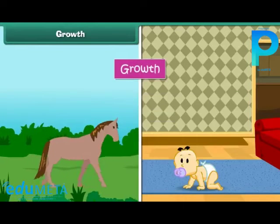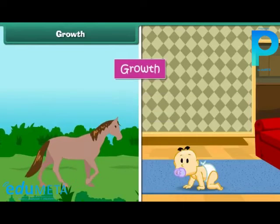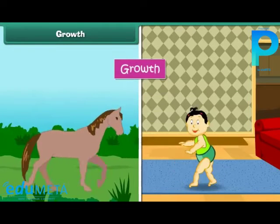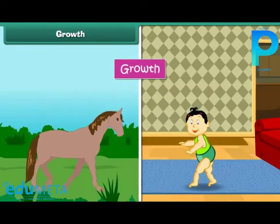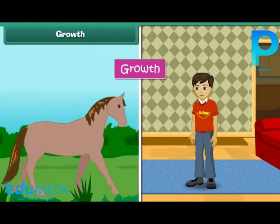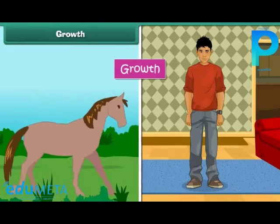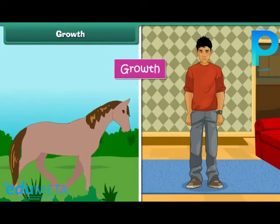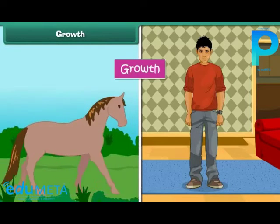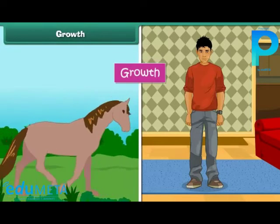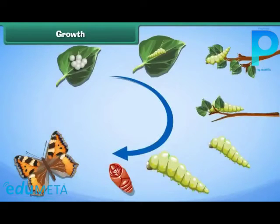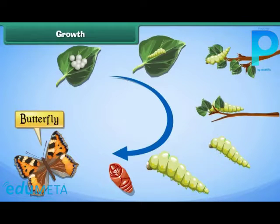All living things grow with time. Some living things grow bigger and larger with time, for example horses, human beings, etc. Some living things change their form with time, for example butterflies, etc.